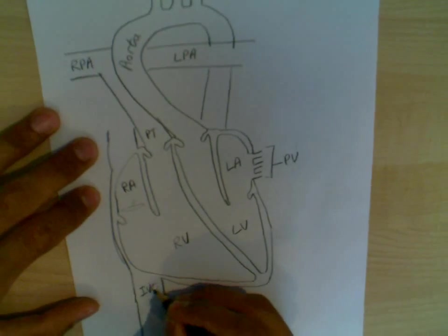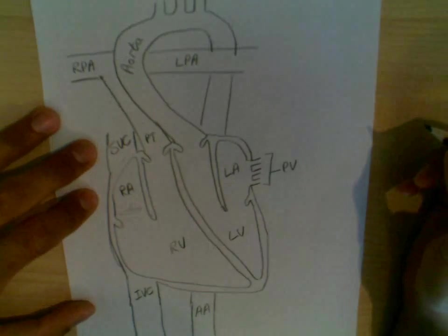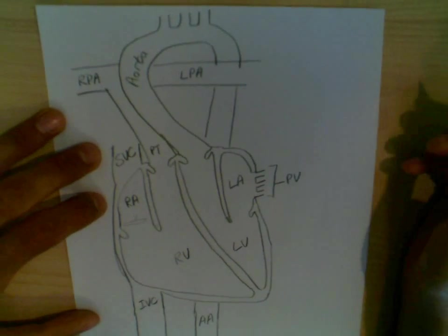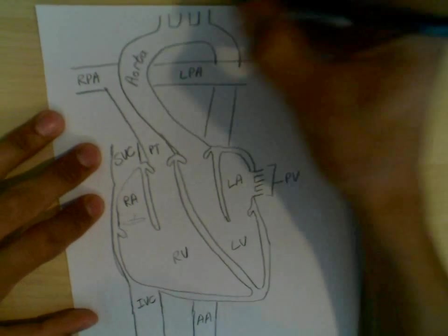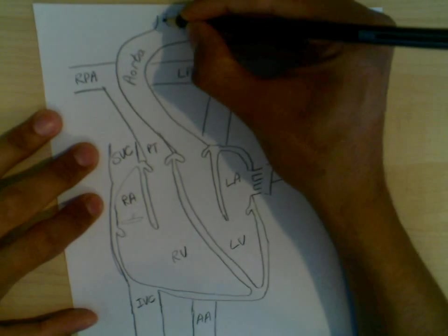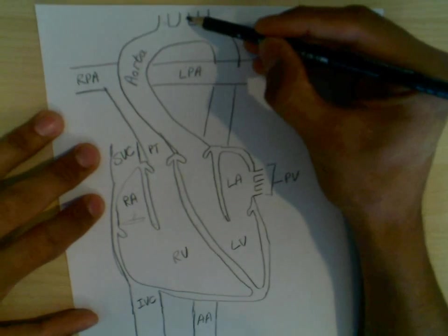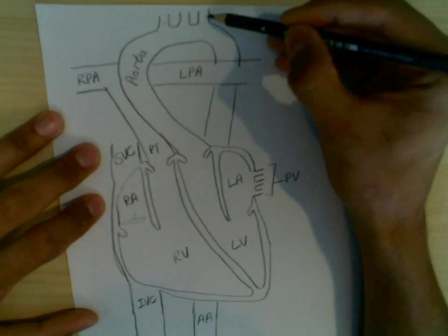Here we have an inferior vena cava, superior vena cava. Here we have the arteries carrying blood to the top of the body. This will be the brachiocephalic trunk. This will be the left common carotid artery. This will be the left subclavian artery.